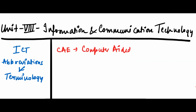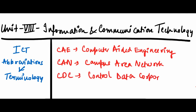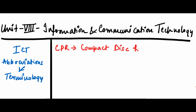Next is CAE — Computer Aided Engineering. Next is CAN — Campus Area Network. Next is CDC — Control Data Corporation. Next is CDR — Compact Disc Recorder. Another one is CPS — Characters Per Second.